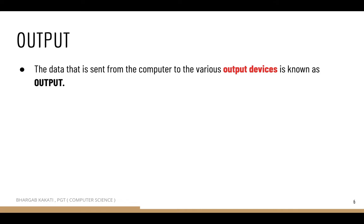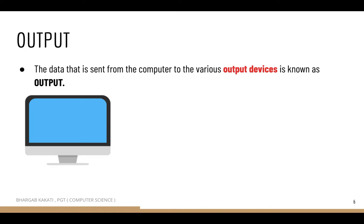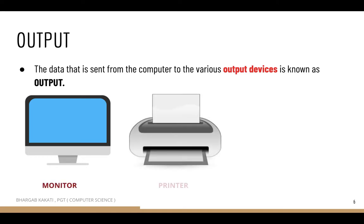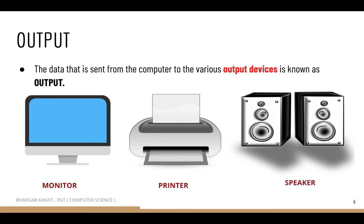After we send data through the input devices, the data is processed and then converted into a meaningful output. The data that is sent from the computer to the various output devices is known as the output. Examples of output devices are monitor, printers, and speakers. We use the monitor to display results, the printer to get printed output, and speakers to listen to music.